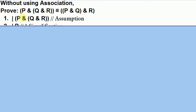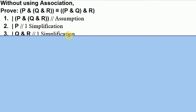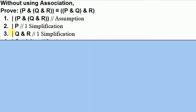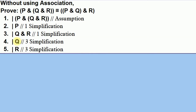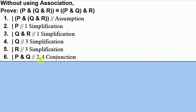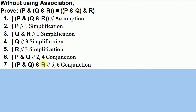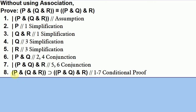We assume P∧(Q∧R) on line one. We use simplification twice to get P on one line and Q∧R on another. Since Q∧R is itself a conjunction, we use simplification on that to get Q on line four and R on line five. Now with P, Q, and R on separate lines, we use conjunction to get P∧Q, and then conjunction again to get (P∧Q)∧R. We close off this conditional proof and derive if P∧(Q∧R) then (P∧Q)∧R.